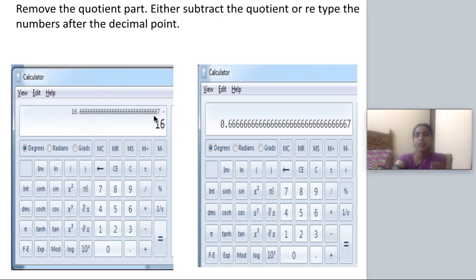only the fractional decimal part. That is, after the decimal point, whatever numbers are available, that alone must be taken separately. You can do it in two ways: either you can subtract the quotient part, or you can